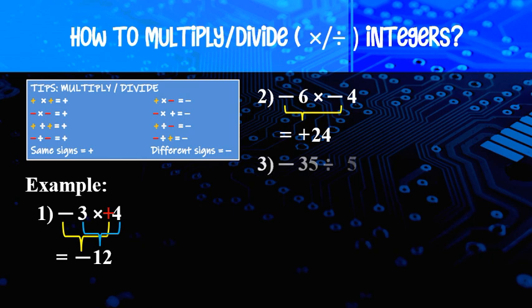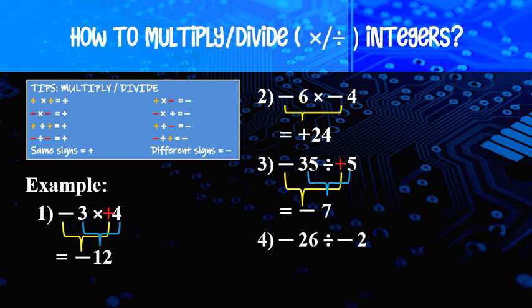Negative 35 divided by 5 — no sign in front of 5 means positive — different sign gives negative answer. 35 divided by 5 equal to 7, so the answer is negative 7. Number 4: negative 26 divided by negative 2 — same sign gives positive — 26 divided by 2 equal to 13. That's how we multiply or divide integers.